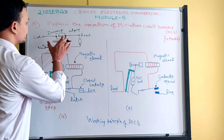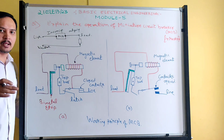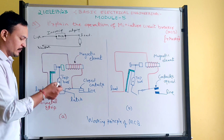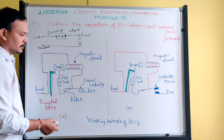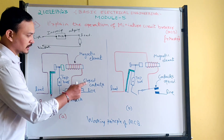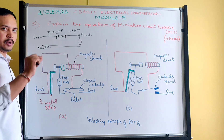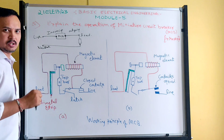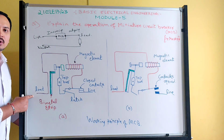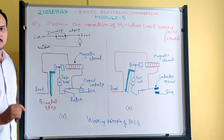Inside MCB, the components are: it will have a magnetic coil or magnetic element, a latch, trip bar, bimetallic strip, and contacts. These contacts are nothing but an on and off switch. One end is connected to line, another one is connected to load. Between line and load, MCB is connected. These are all the inside components of the MCB.